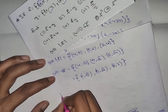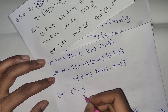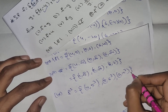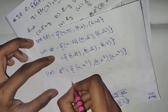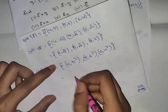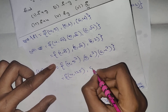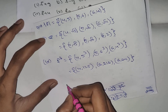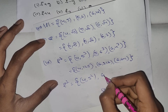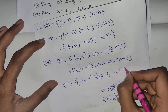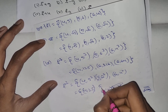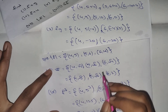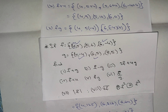F-square: (4, 5-cube), (5, 6-cube), (6, 4-cube). Sorry, f-square: (4, 5-square), (5, 6-square), (6, 4-square). That gives (4, 25), (5, 36), (6, 16). F-cube: (4, 125), (6, 216), (4, 64), (6, 64). Thanks for watching — subscribe!